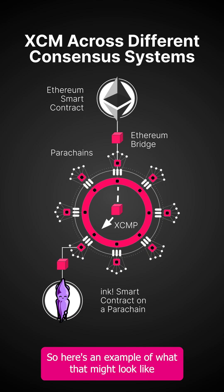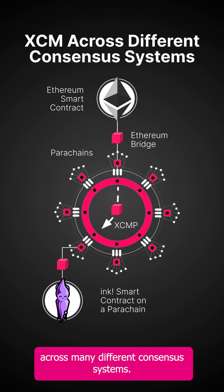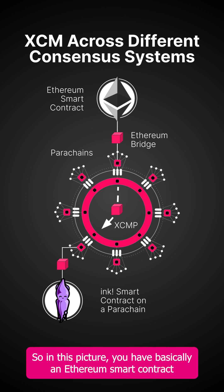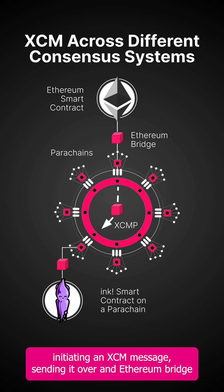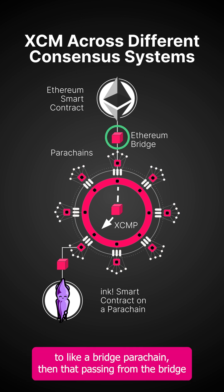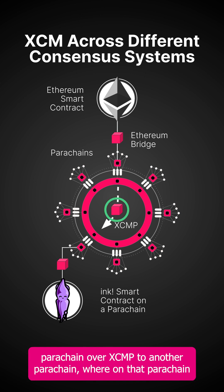Here's an example of what that might look like across many different consensus systems. In this picture, you basically have an Ethereum smart contract initiating an XEM message, sending it over an Ethereum bridge to a bridge parachain, then that passing from the bridge parachain over XCMP to another parachain.